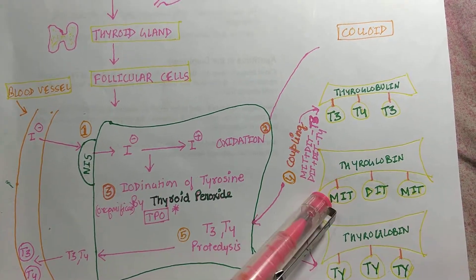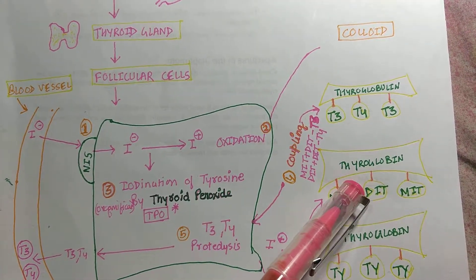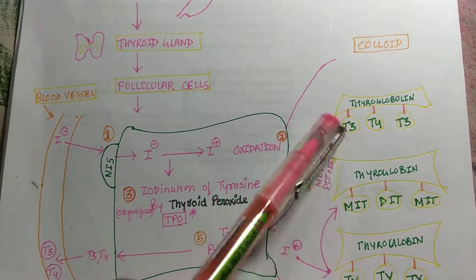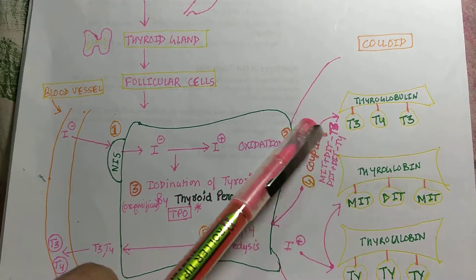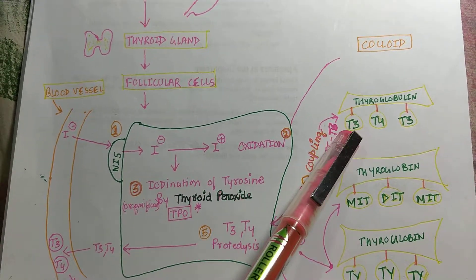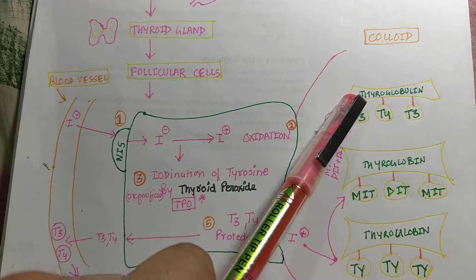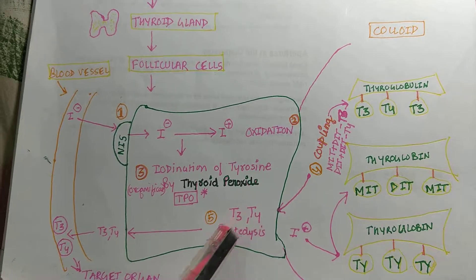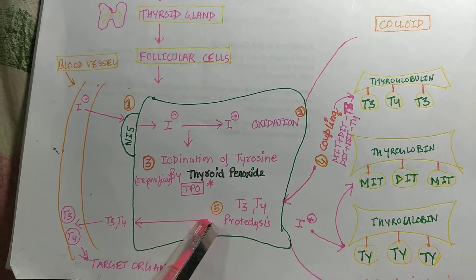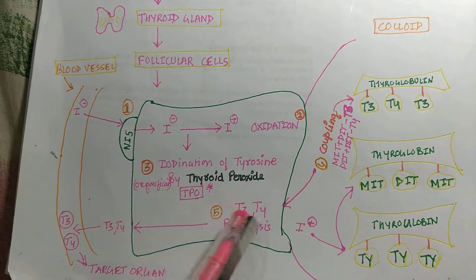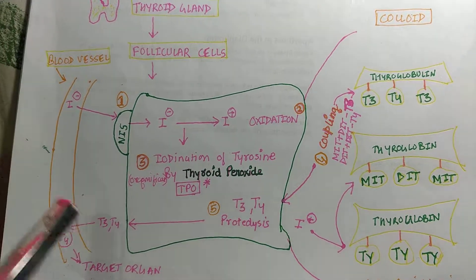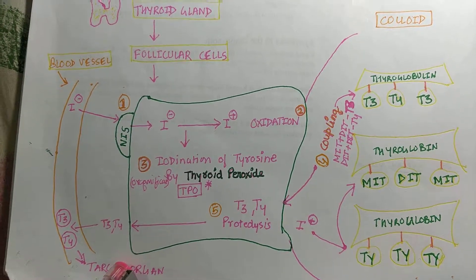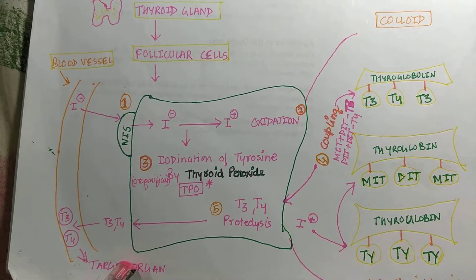MIT plus DIT forms T3, and DIT plus DIT forms T4 — these are our thyroid hormones. The fifth step is proteolysis of T3 and T4 from the thyroglobulin protein. After proteolysis, T3 and T4 exit the follicular cells and enter the blood vessels, then travel to target organs where they promote growth and proliferation of cells.